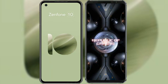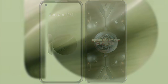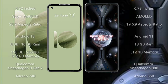I will compare the new ASUS Zenfone 10 with the ASUS ROG Phone 5 Ultimate. The ASUS Zenfone 10 comes with a 5.92-inch Super AMOLED display and an aspect ratio of 20:9. The ASUS ROG Phone 5 Ultimate comes with a 6.78-inch AMOLED display.